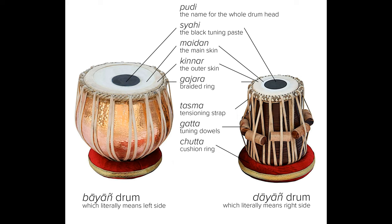Tasma: tension strap — straps that hold the drum head in place and allow for tuning adjustments. Lau: shell — the main body of the bayan, usually made from metal — copper, brass, or sometimes steel or clay.